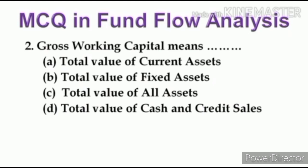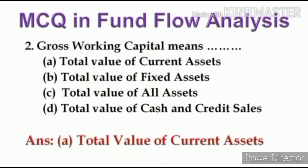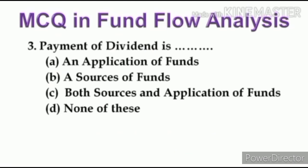Second question: Gross working capital means — total value of current assets, total value of fixed assets, total value of all assets, or total value of cash and credit sales. The right answer is Option A: total value of current assets. Gross working capital means the sum total of current assets.